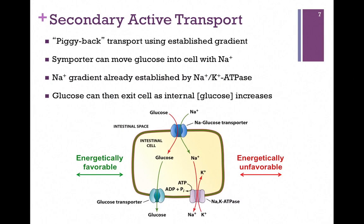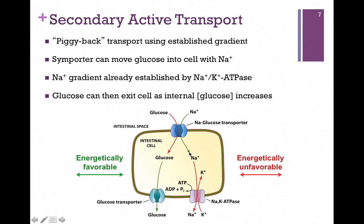Each of these are examples of primary active transport, but there is something called secondary active transport, which works on a piggyback mechanism. In this illustration, the green arrows indicate processes that are energetically favorable, and the red arrows indicate processes that are energetically unfavorable. The sodium-potassium pump moves sodium and potassium in opposite directions — both unfavorable — so it costs us ATP hydrolysis. Now, the sodium-glucose transporter at the top of the screen is the example of secondary active transport. We already set up our sodium gradient using the sodium-potassium pump, and here we use the energy of moving that sodium molecule down its concentration gradient to transport a glucose molecule against its gradient.